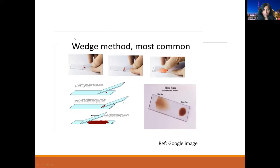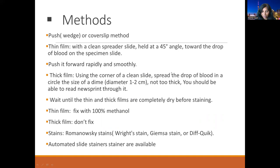Different methods for preparation include the push method or the coverslip method; the wedge method is used most commonly. On the thin slide, we take a drop of blood and with the help of a spreader slide we spread the blood to make a nice thin film. For the thick film, we spread a drop of blood with the corner of the slide in a diameter of approximately one to two centimeters. It should not be too thick because it would fall from the slide; to check thickness, you should be able to read a newspaper through it. Once slides are made, they are dried, fixed, and then stained. Thin films are fixed with 100% methanol; thick films are not fixed. Different stains used include Wright stain, Giemsa stain, and others, and the majority of labs have automated slide stainers.